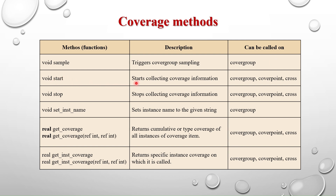The start method starts collecting the coverage information and it can be called on the cover group, cover point, and cross coverage. Similarly, the stop method stops collecting the coverage information and can be called on the cover group, cover point, and cross coverage. So start and stop methods are used to conditionally enable the coverage — similar to how we used the if construct, we can use start and stop to conditionally enable coverage on a cover group, cover point, or cross coverage.